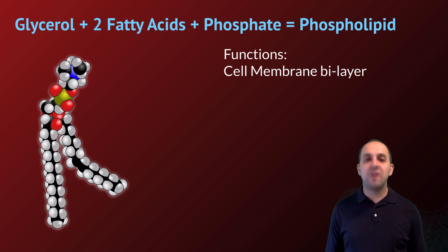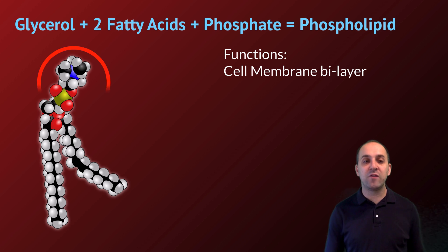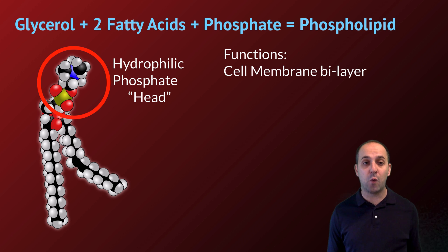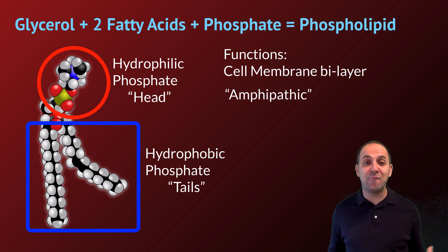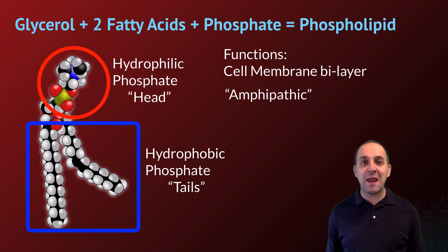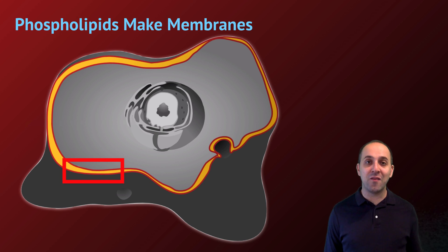The second group of lipids is the phospholipids, formed by joining a glycerol with two fatty acids and replacing the third with a phosphate group. Phospholipids are the main ingredient in cell membranes. The phosphate group is hydrophilic (attracted to water) and the fatty acid tails are hydrophobic (repelled from water). Any molecule with both a hydrophilic and hydrophobic region is called amphipathic, and as a result phospholipids spontaneously form stable structures in water.